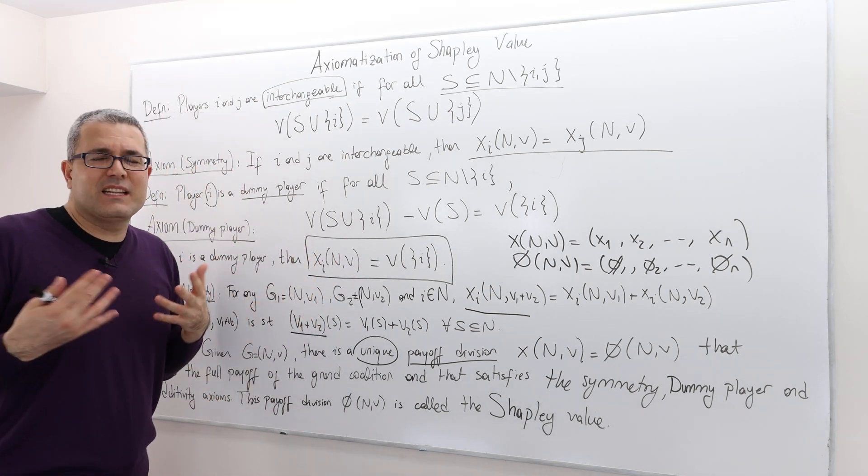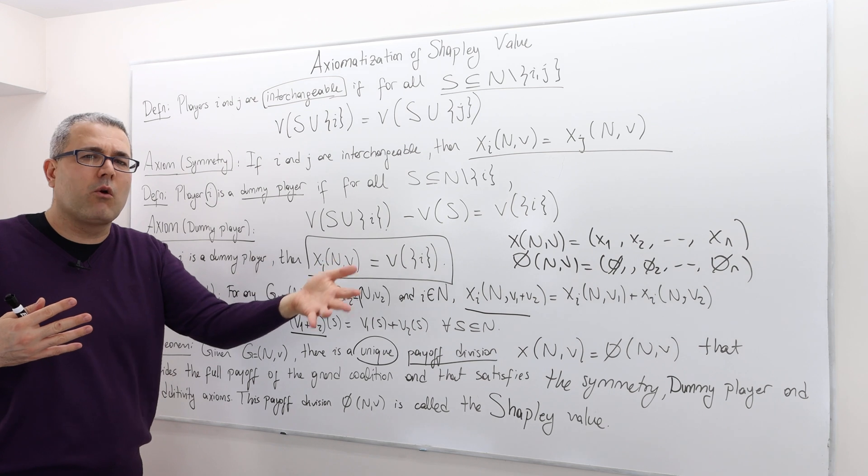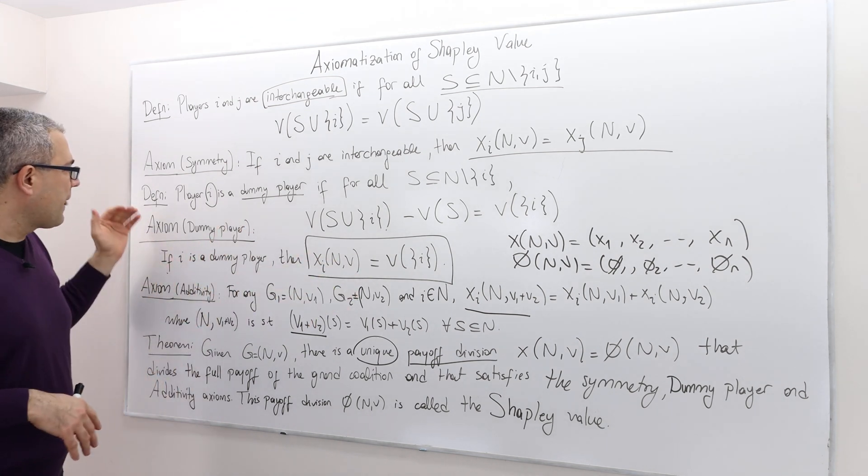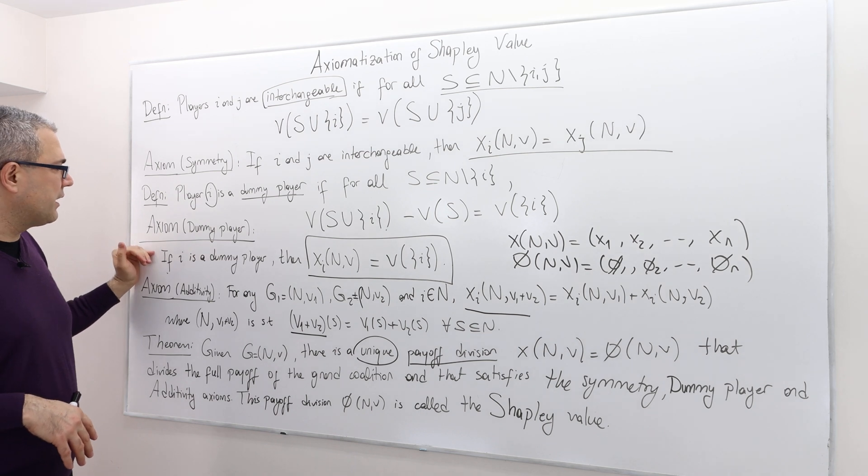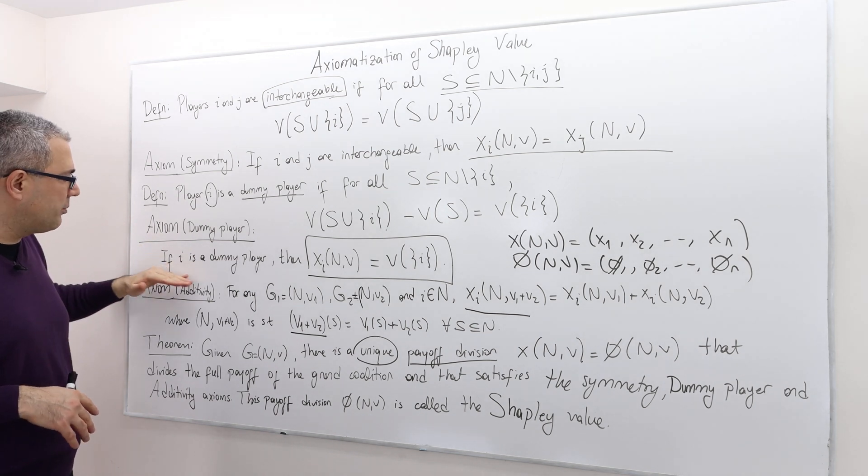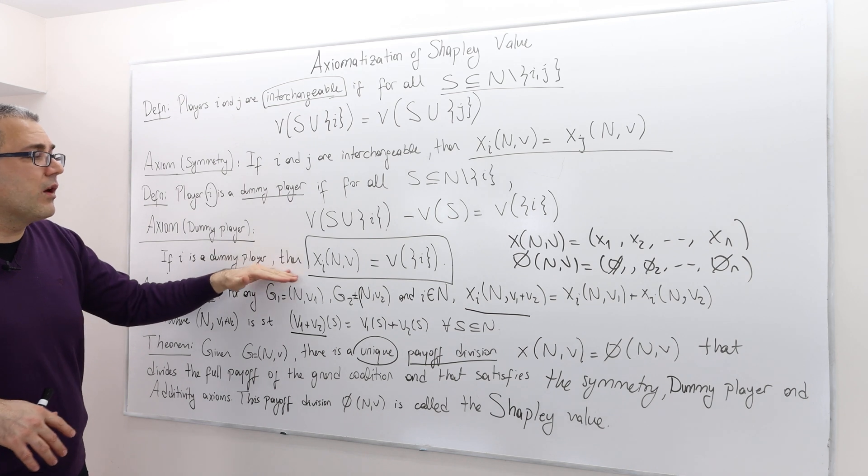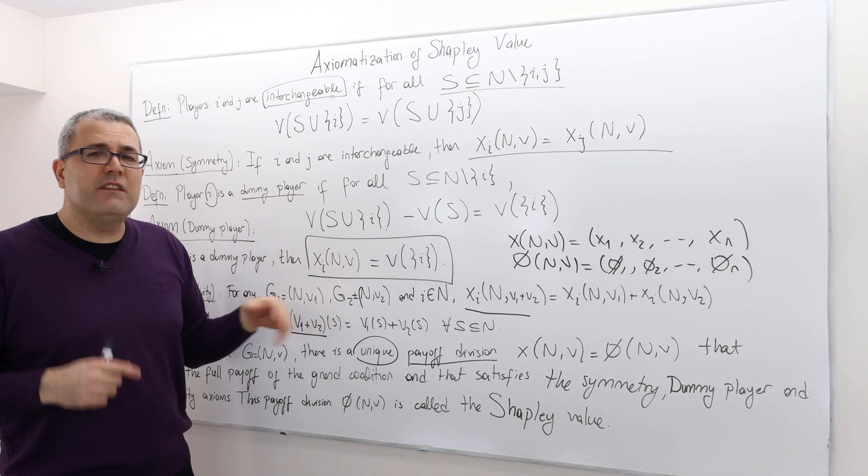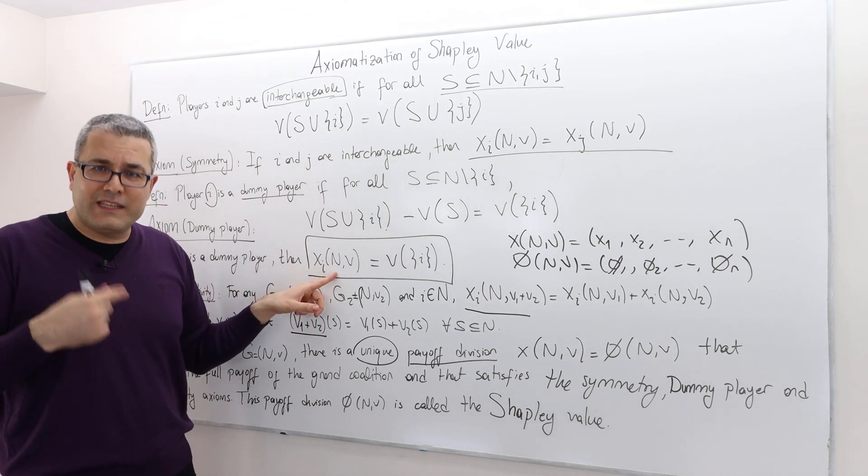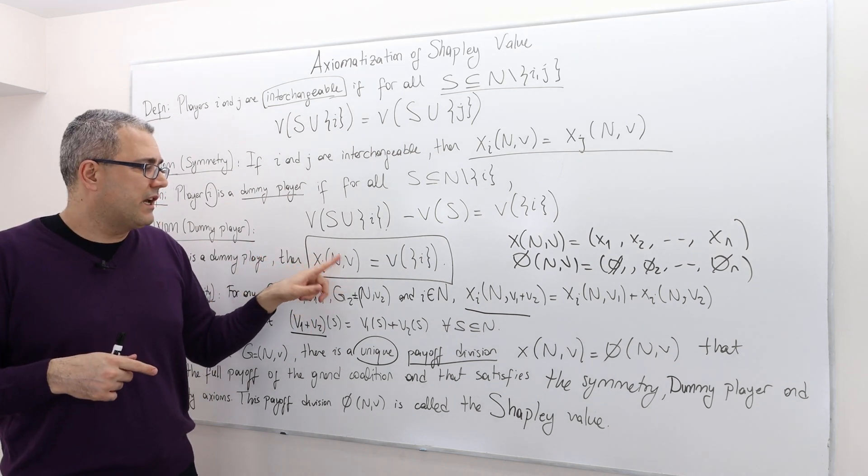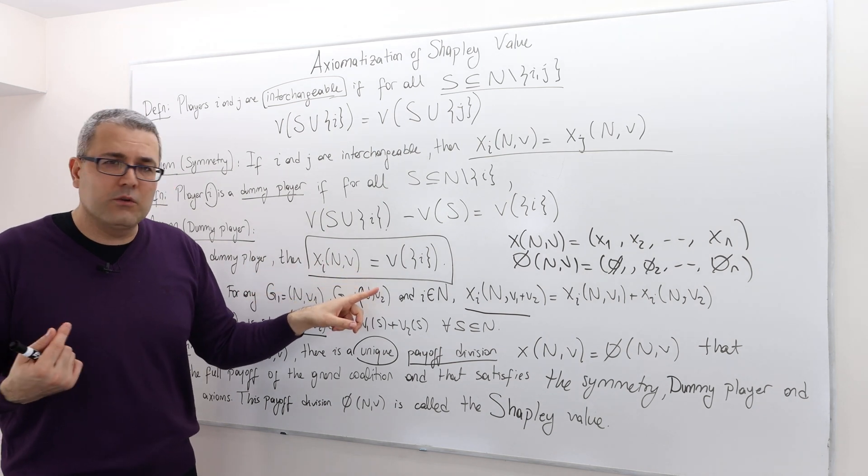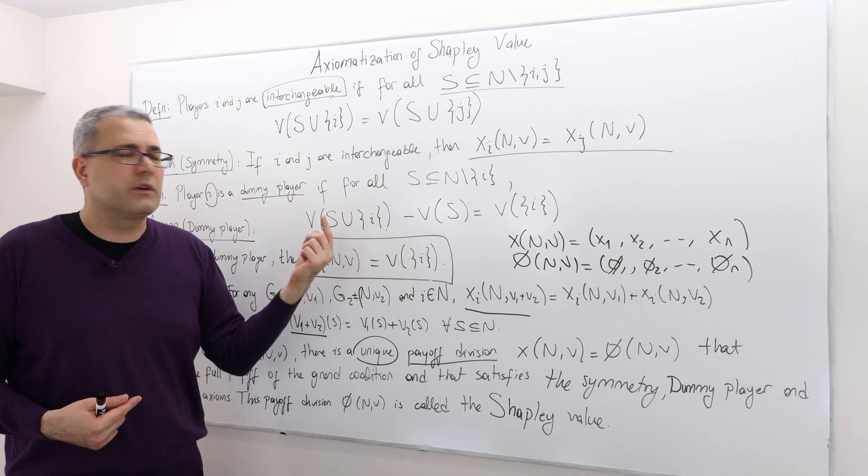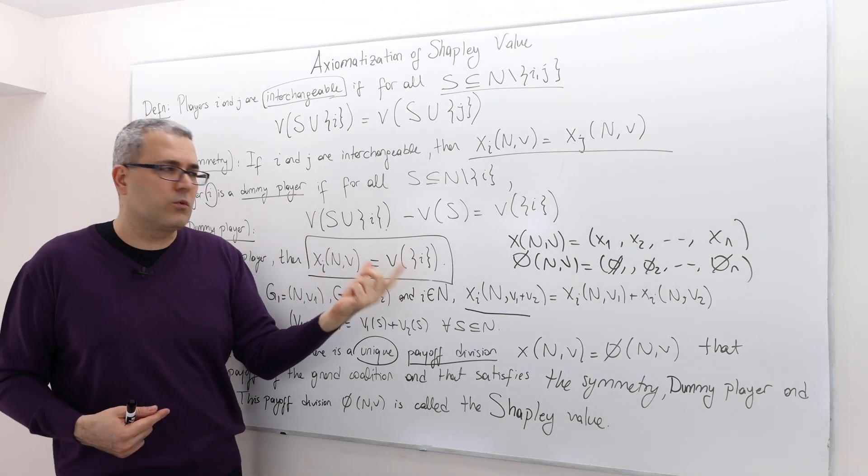So in that sense, it's dummy. Whether you include him to a coalition or not, it's not going to change anything. So the axiom or the dummy player assumption or axiom is the following. If player i is a dummy player, well, then you know what? His payoff from this game, so xi and v basically means his payoff from the game with set of players and the worth function v must be equal to what he could achieve if he was or if he were alone. Or his self-worth.